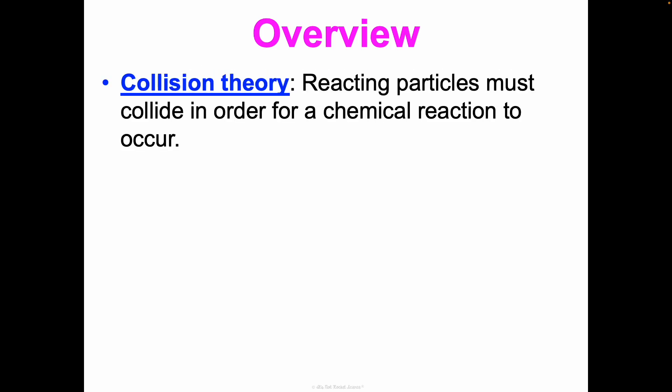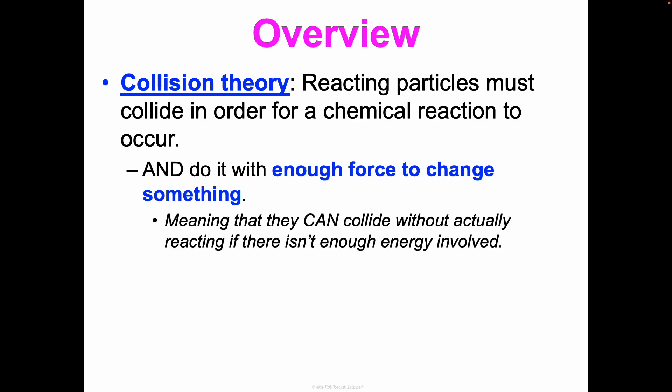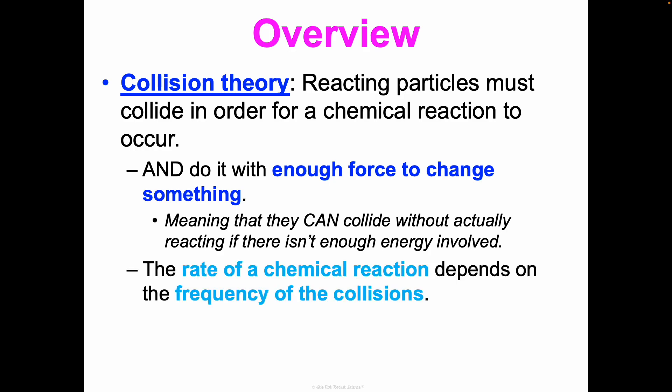Collision theory should be a refresher from unit five on chemical reactions, where it was first introduced. This is the concept that reacting particles must collide in order for a chemical reaction to occur. They can't just bump into each other — they have to do so with enough force to actually change something. They can collide without actually reacting if there isn't enough energy involved. The rate of a chemical reaction depends on the frequency of these collisions between particles, which we'll talk more about in concept three on reaction kinetics.